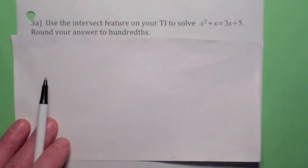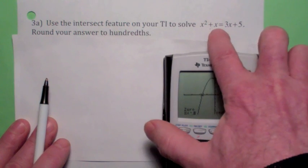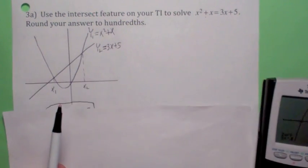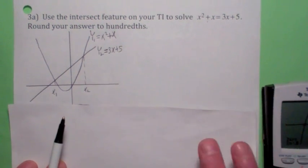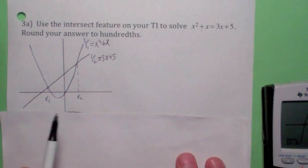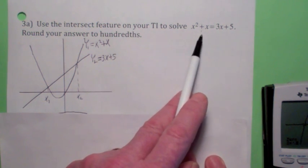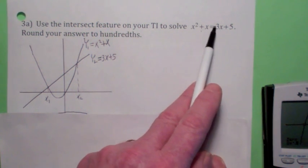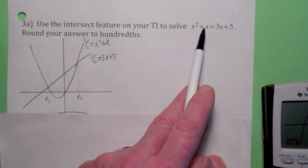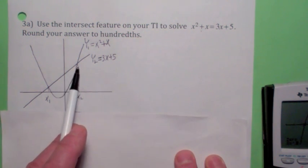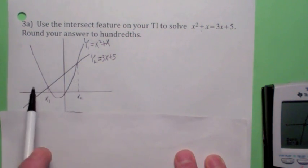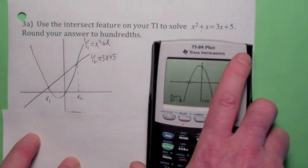Here's something else I want to talk about today. I want to talk about the intersect feature. Let's see when these two graphs intersect. And what I'm trying to find is, to solve this equation, if I enter this as y1 and this is y2, the solutions to the equation are precisely where the graphs intersect, right?